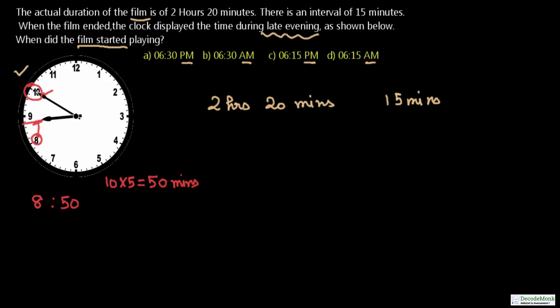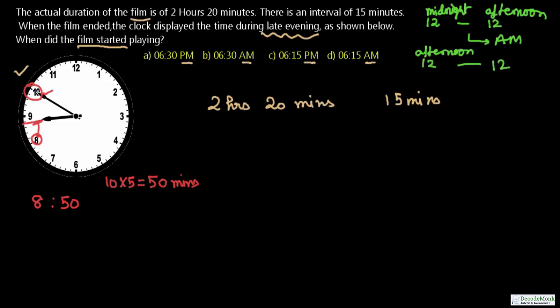The time shown by the clock is 8:50, and it is during the late evening. Remember: 12 midnight to 12 afternoon is AM, and 12 afternoon to 12 midnight is PM. Since it is late evening — between afternoon and midnight — the time is 8:50 PM.